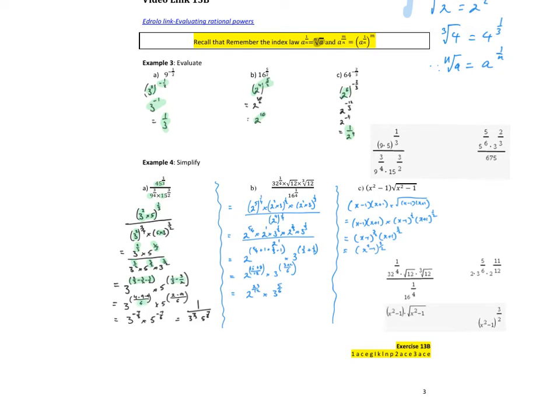So once we group all the like terms together, we've just got to be careful with our fractions. So I think what works nicely is just getting a common denominator everywhere. So 2 on 3, 3 on 2, 3 on 2, let's make it on 6. So it's the equivalent of 4 on 6, 9 on 6, 9 on 6. So we get 3 to the power of negative 7 on 3 and 5 to the negative 7 on 6, which we can write in positive index form.